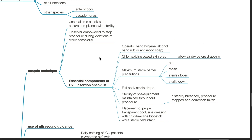For aseptic technique, use a real-time checklist to ensure compliance with sterility, and empower the observer to stop the procedure during violations. Essential components of a CVL insertion checklist include operator hygiene using either alcohol hand rub or antiseptic soap, and chlorhexidine-based skin prep — allow air dry before draping.